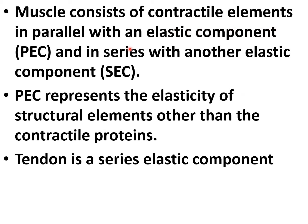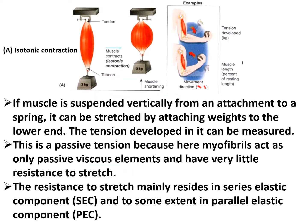The muscle consists of a contractile element in parallel with an elastic component and in series with another elastic component. The parallel elastic component represents the elasticity of structural elements other than the contractile protein, and the tendon forms the series elastic component. If the muscle is suspended vertically and stretched by attaching a weight, the tension developed is a passive tension because the myofibrils act as only passive viscous elements with very little resistance to stretch. Resistance to stretch mainly resides in the series elastic component and to some extent in the parallel elastic component.